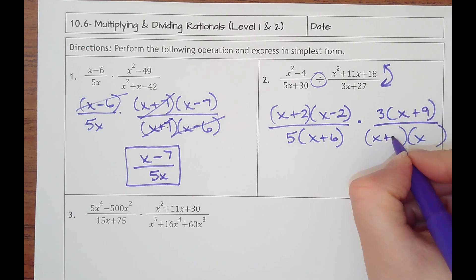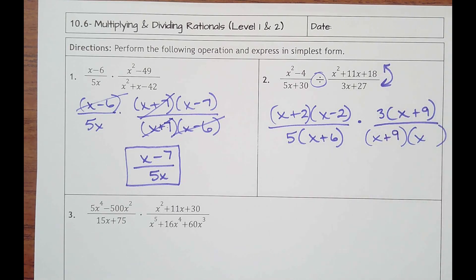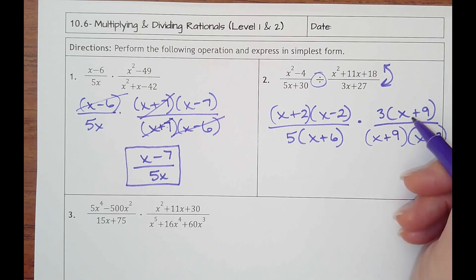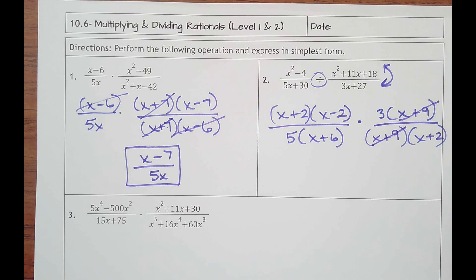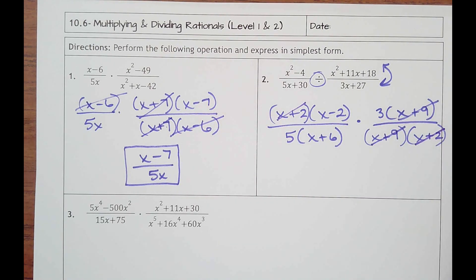Oh, 9 and 2. That took me way too long. I was thinking 6 and 3. 9 and 2. Okay, and then I can cancel x plus 9s. I can cancel x plus 2s.